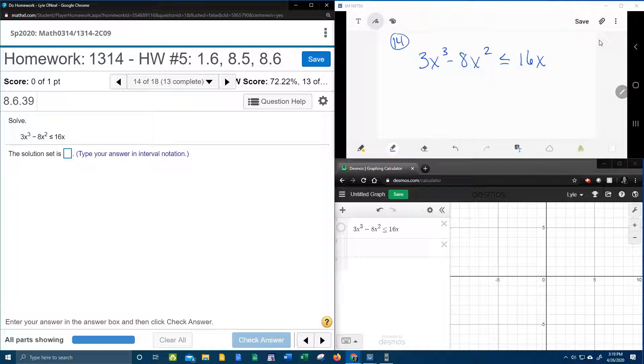To solve a polynomial inequality, you do need to make it, in this case, less than or equal to 0. And so I'm going to bring my 16x over. That's going to give me 3x cubed minus 8x squared minus 16x less than or equal to 0.